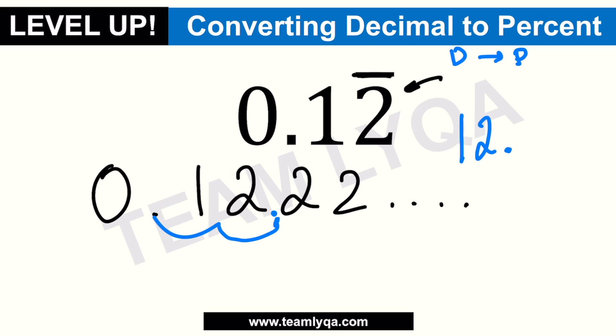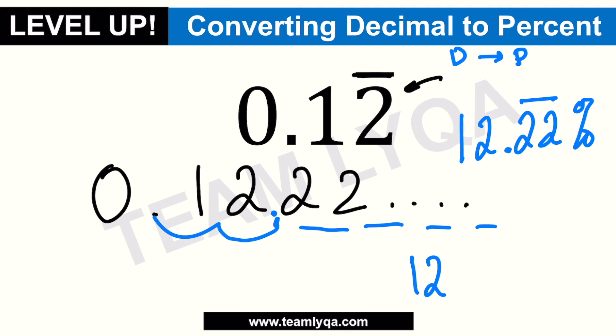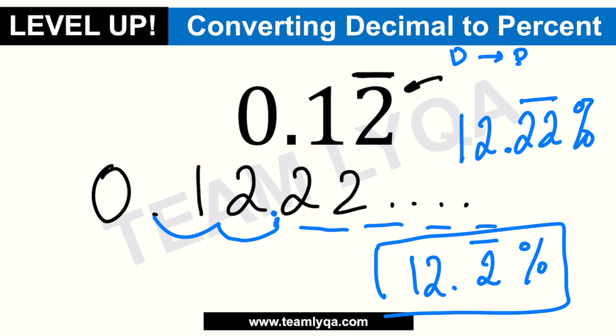Now here it gets a bit tricky. If I just write 12 percent, that's not enough — because you still have an infinite repeating 2. So you could write it as 12.22 percent, or better yet, write it as 12.2̄ percent with 2 being the repeating number. On aptitude tests, look for either form.